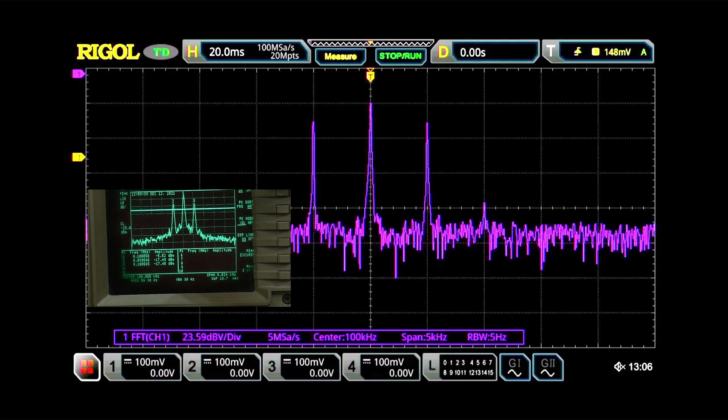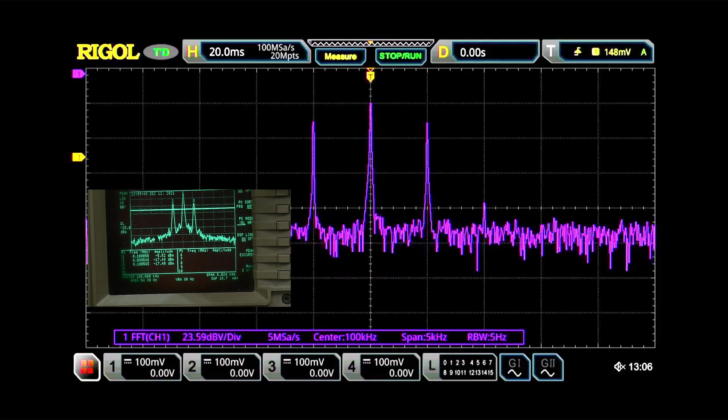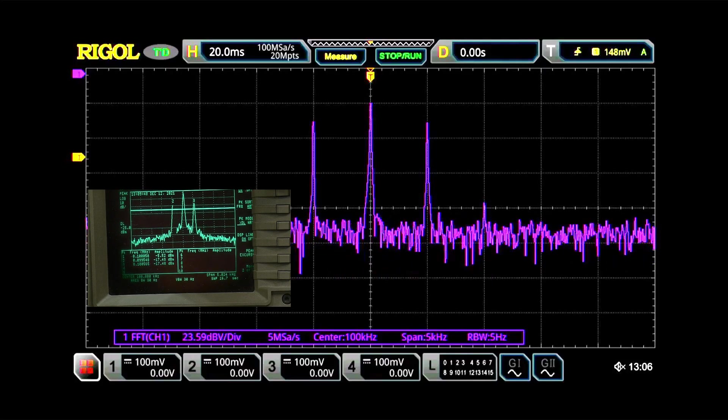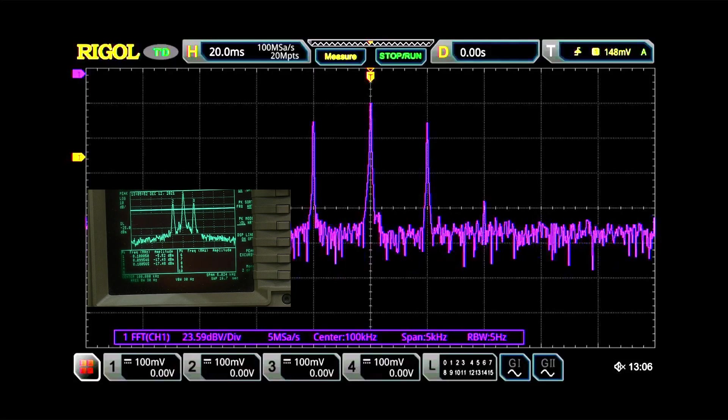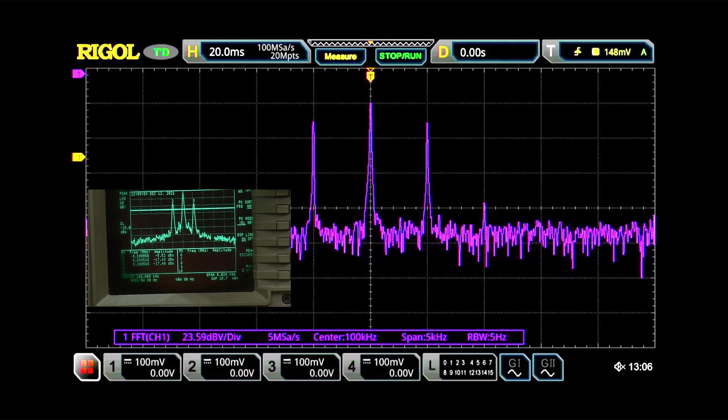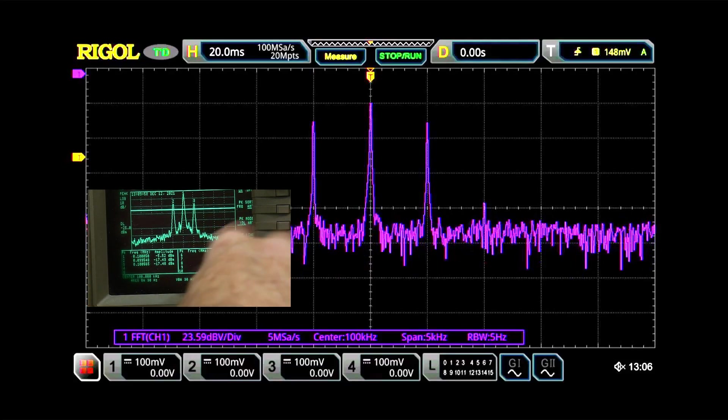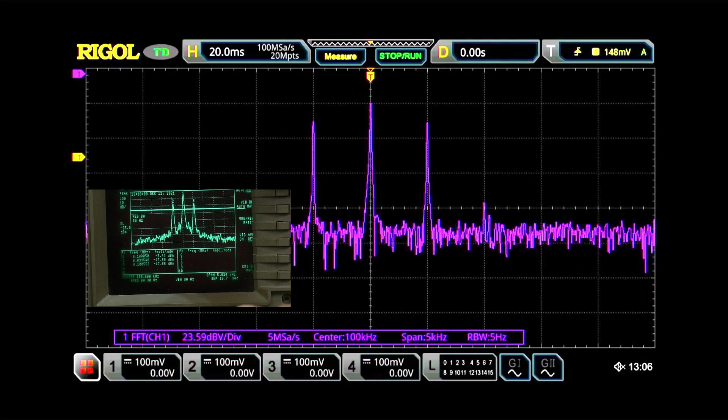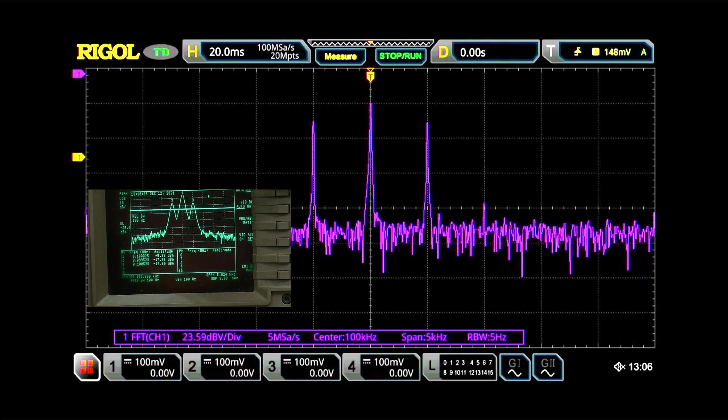Now one thing that we can do here, well first of all we should notice that we have a resolution bandwidth of 30 Hz on the HP instrument. It's sweeping very, very slow. We have a resolution bandwidth of 5 Hz on the Rigol and it's sweeping much, much, much faster. So the Rigol is winning on things like this. Let's set the resolution bandwidth up so we're going a little bit faster. Let's just take a look at it. So let's see if the peaks compare.